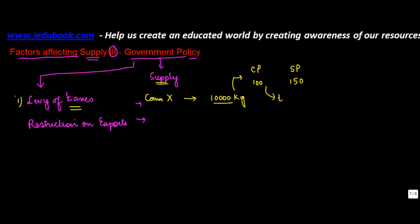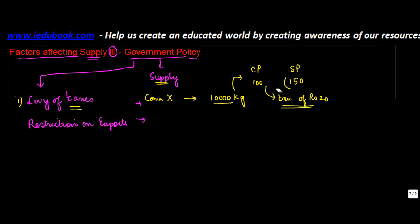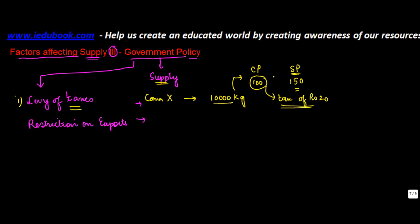This tax could be anything — the government levies a tax of rupees 20. In some cases, you can recover this from the consumer, so he can actually add this to the selling price and make it 170. But what if the consumer is not ready and willing to pay this 20? Then the selling price will remain at 150, whereas the cost of production, which was initially 100, is going to be added on to this 20, making it 120.